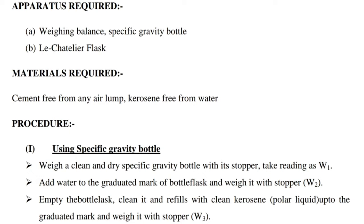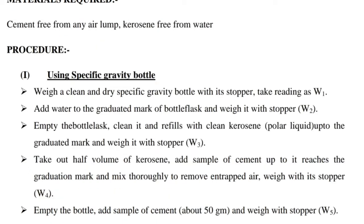Next, empty the bottle flask, clean it, and refill with clean kerosene up to the graduated mark and weigh it with the stopper as W3. Next, take out half the volume of kerosene, add a sample of cement until it reaches the graduation mark, mix thoroughly to remove entrapped air, and weigh with the stopper as W4.